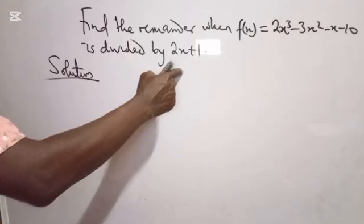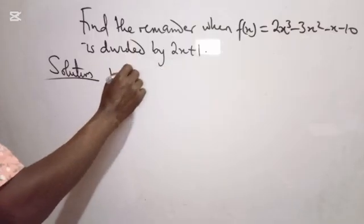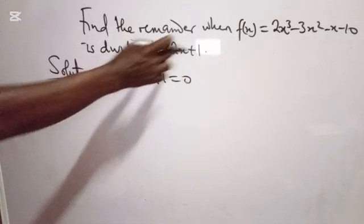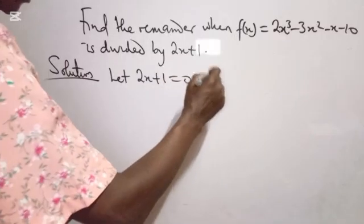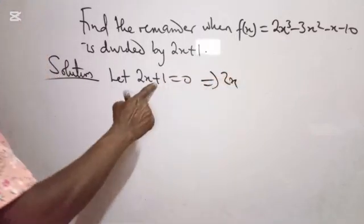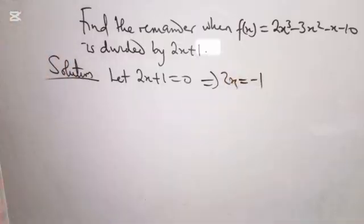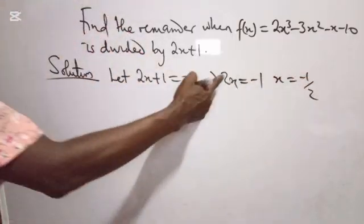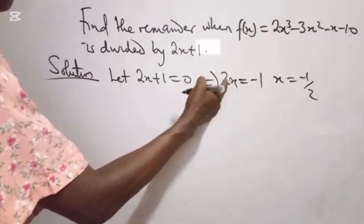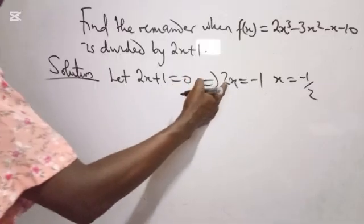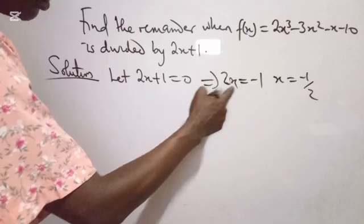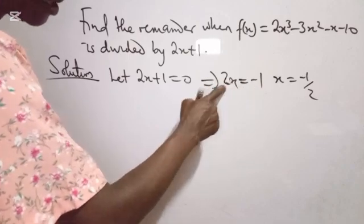The divisor here is 2x plus 1. Let that divisor equal 0. That implies 2x equals minus 1. Dividing both sides by 2, we get x equals minus 1 over 2.